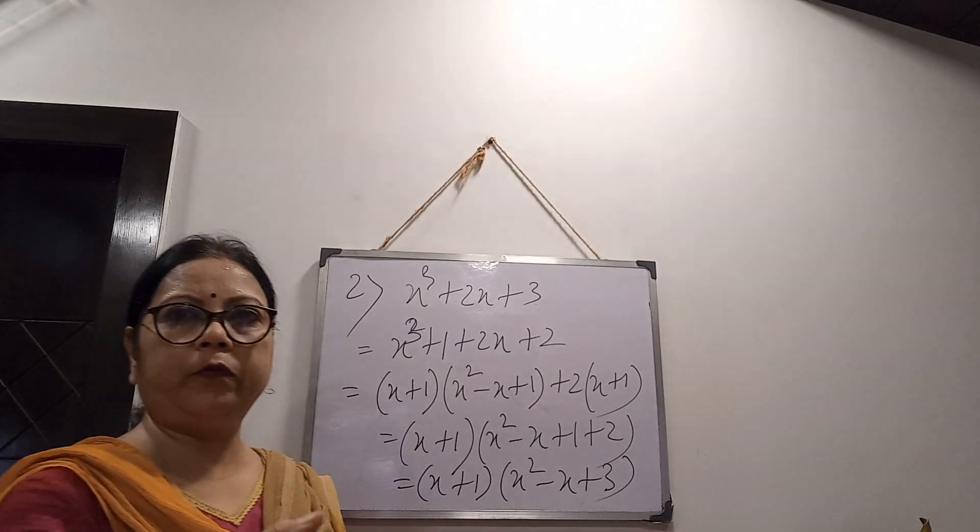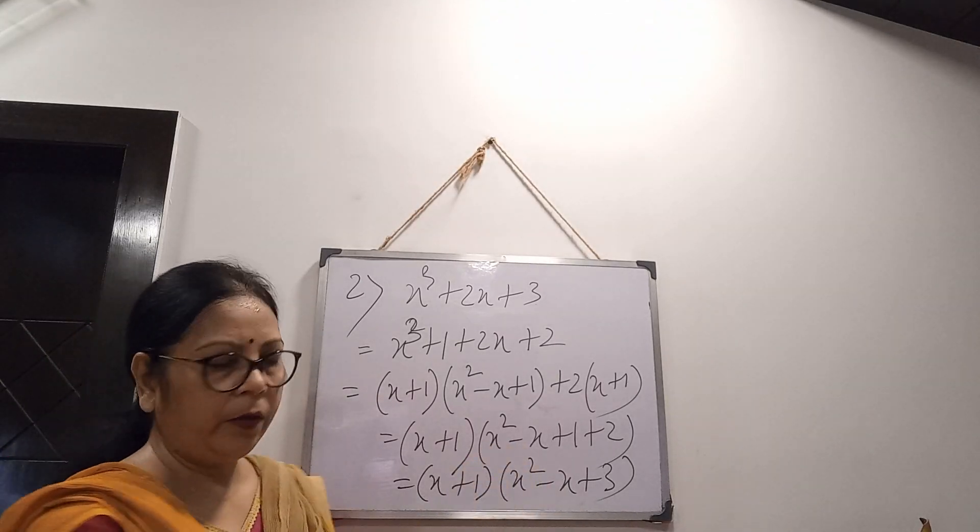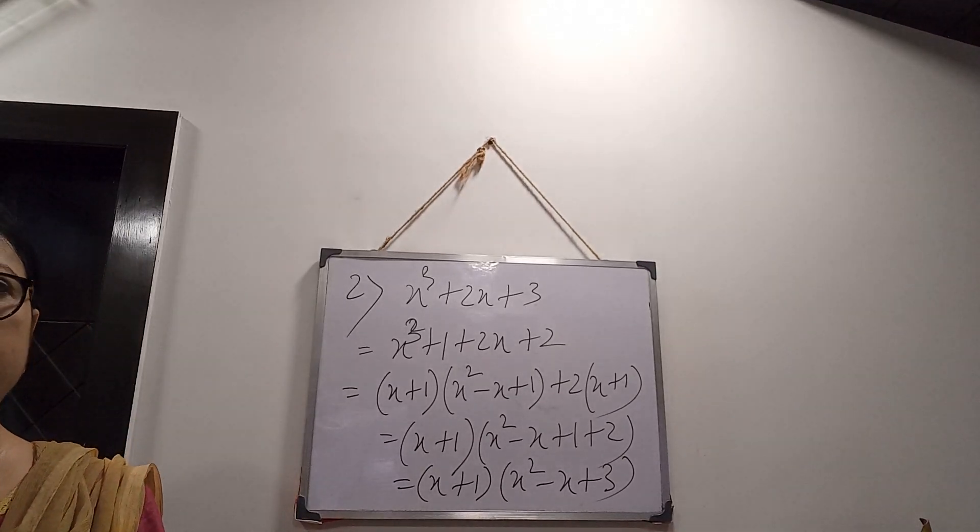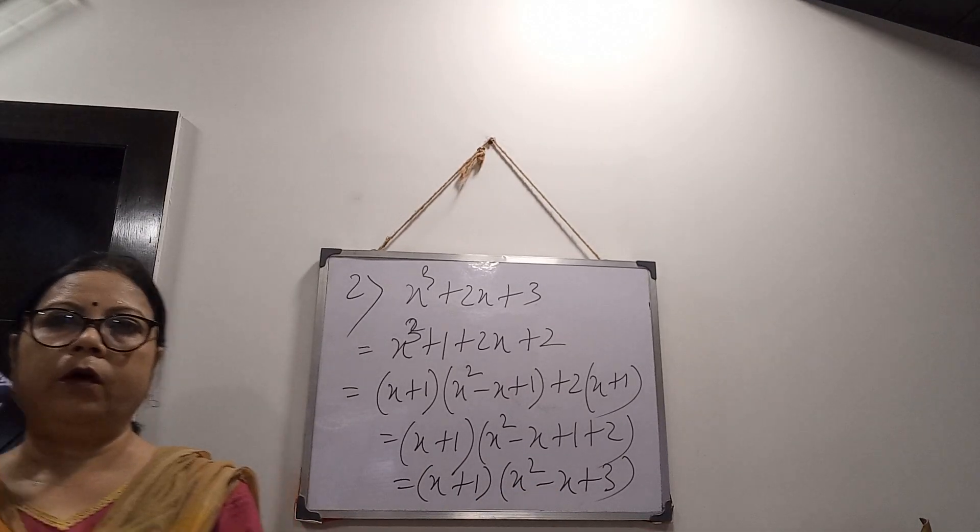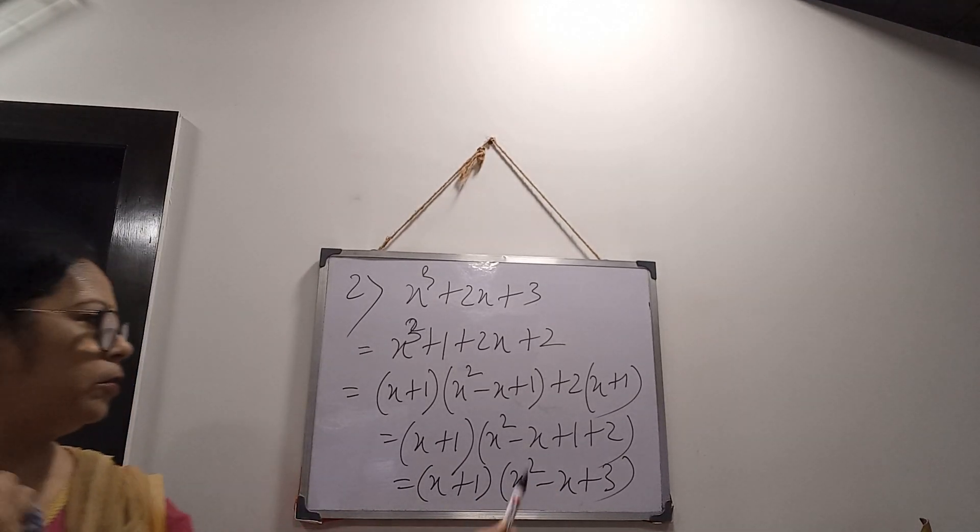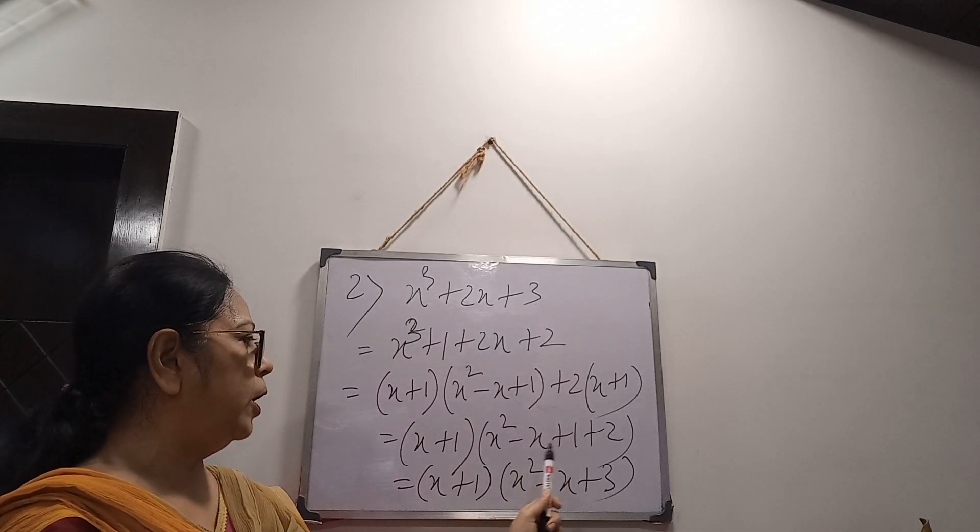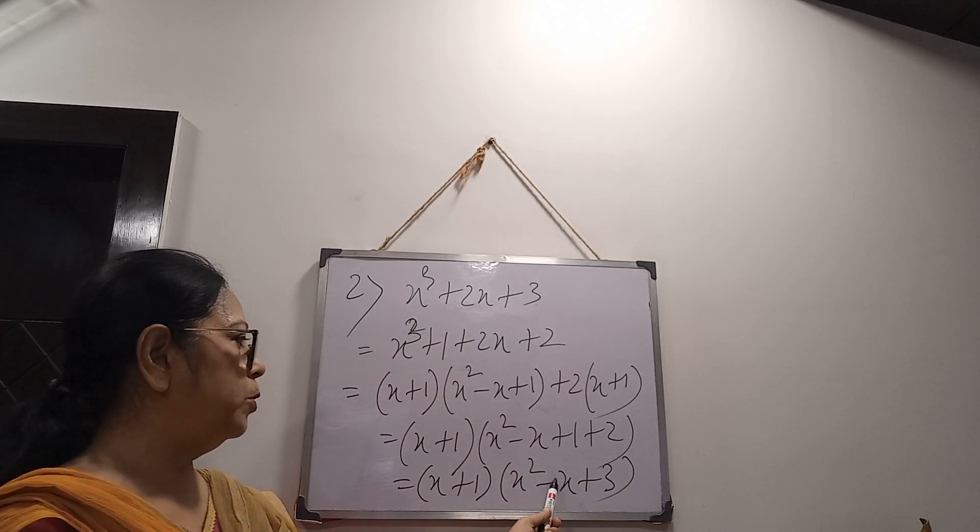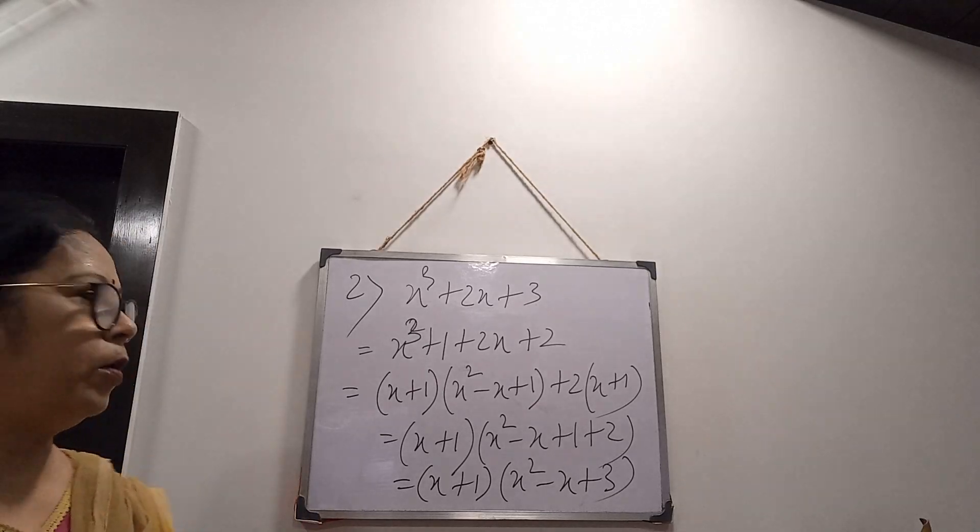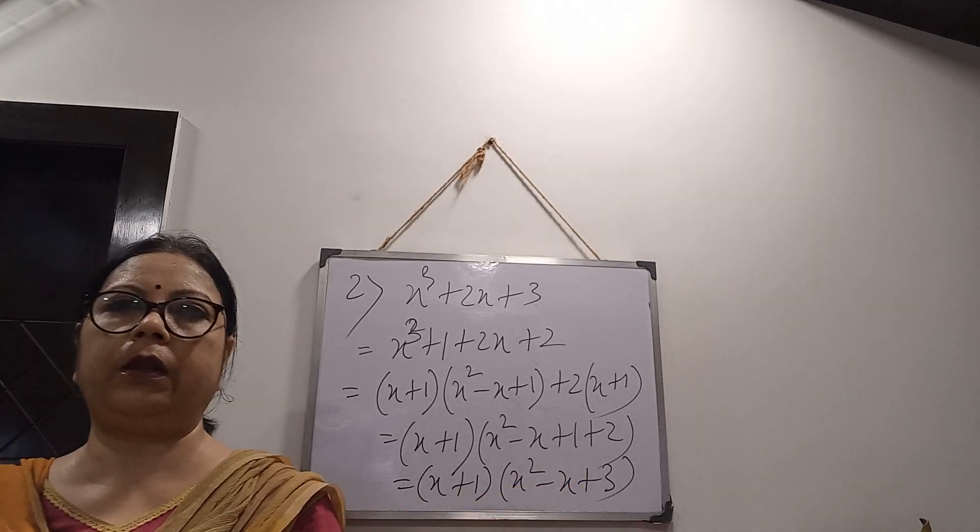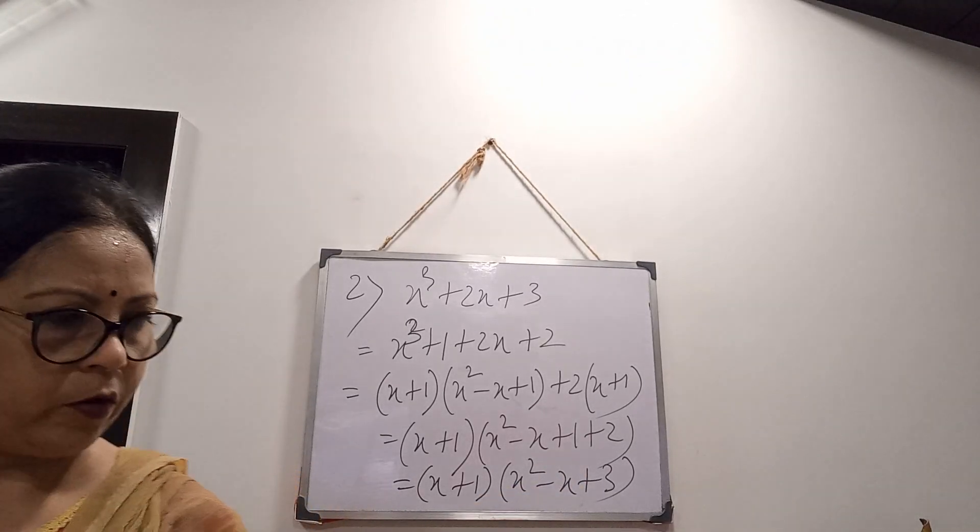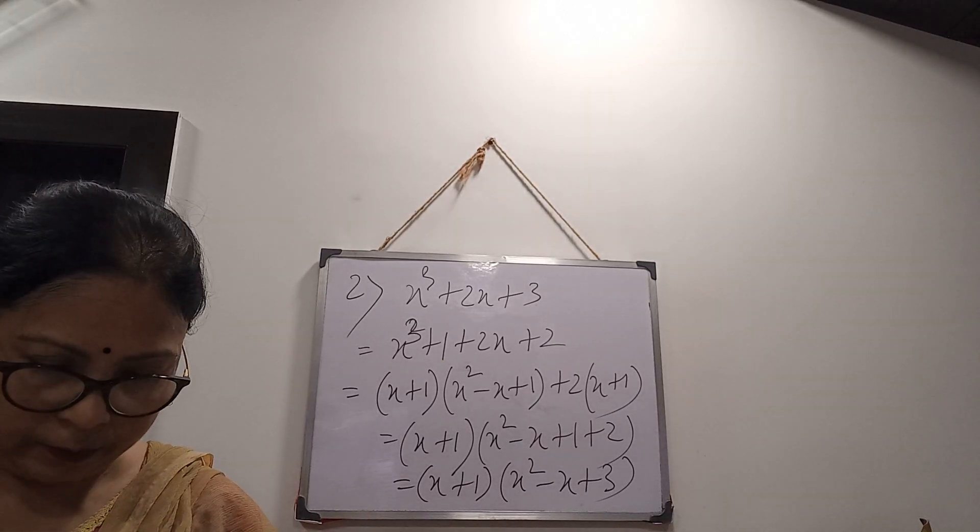Now, I have told you in previous sum that you have to check whether middle term is possible or not. Now see 3. What are the factors of 3? 3 and 1. By using 3 and 1, it is not possible to bring 1. So our factors are these. Now moving to another sum.